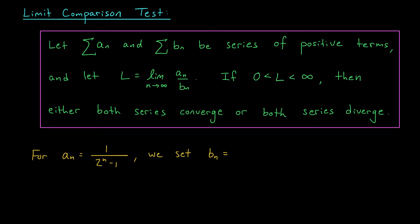The statement begins much like the comparison test. You have two series — a sum of a_n's and a sum of b_n's — and the terms in these series are positive. For this test, we let L denote the limit as n tends to infinity of a_n over b_n. Now if L is a constant that lies somewhere strictly between 0 and infinity, then either both series will converge or both series will diverge.